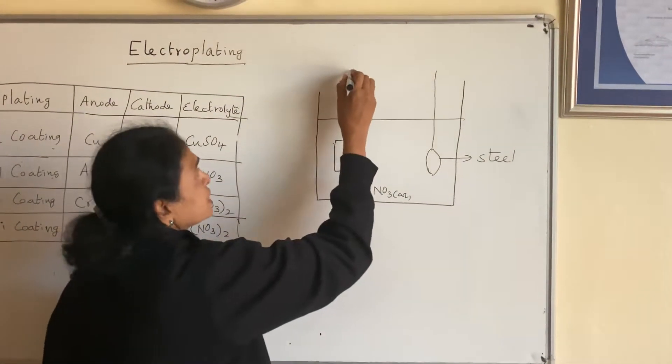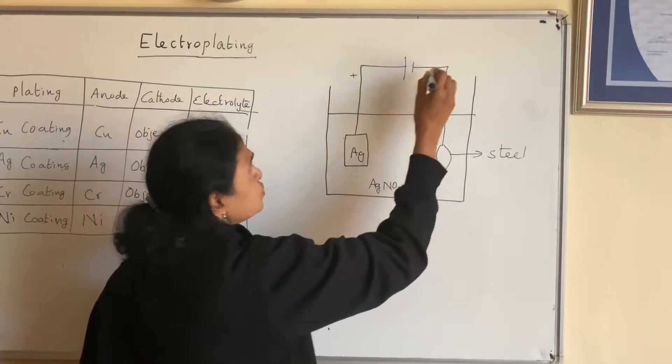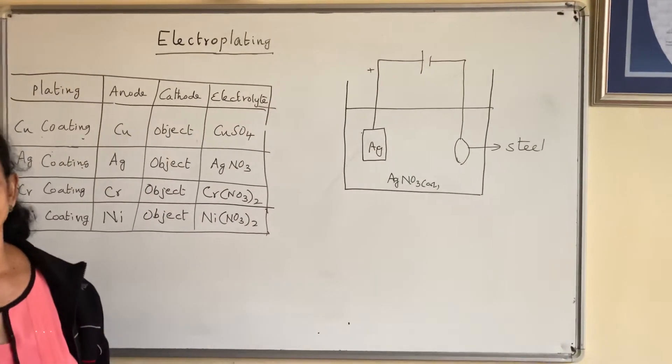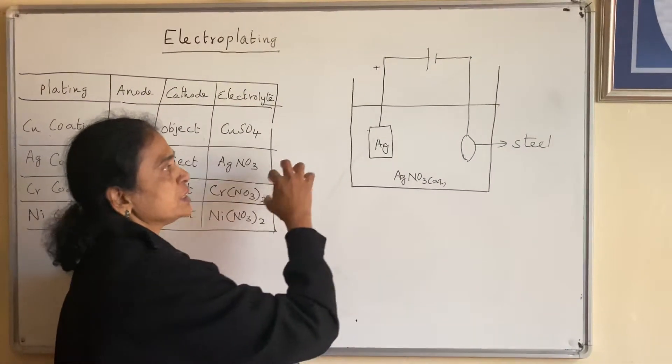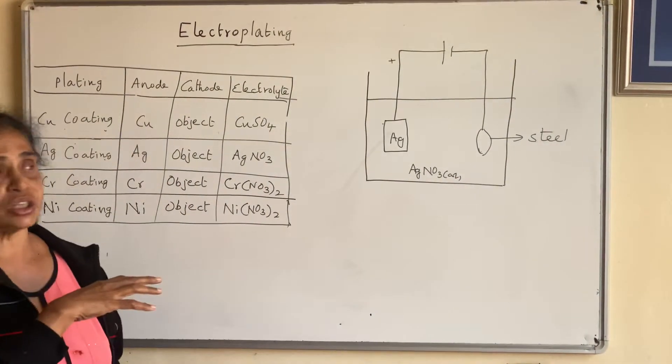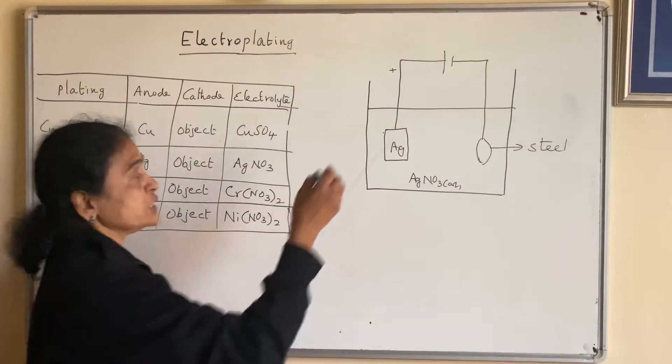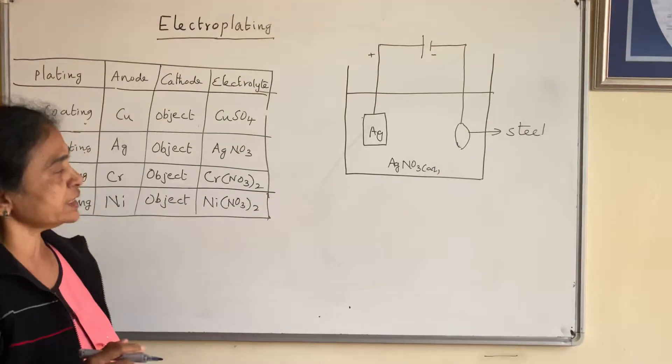So you pass electricity. Normally the electricity that is used for this electroplating is direct current. When we use alternating current, during one process, the metal will be deposited. But when the direction of the current changes, it is removed from there. So alternating current is not used for electroplating. Only direct current is used.